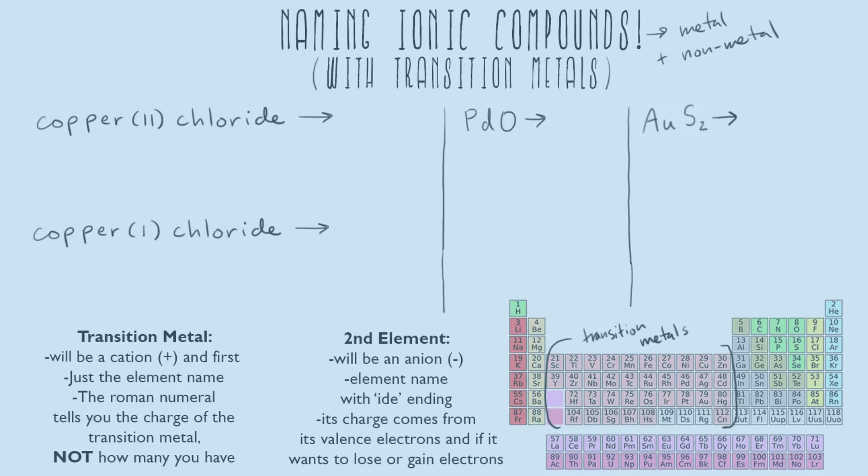The biggest mistake I see students make is that they want to say, 'Copper two chloride — copper two, that means I have two coppers.' That's not right. The Roman numeral only tells you the charge of the transition metal, and you always know that transition metal is going to be positive. So it's really going to tell you how many positive charges you have on that metal.